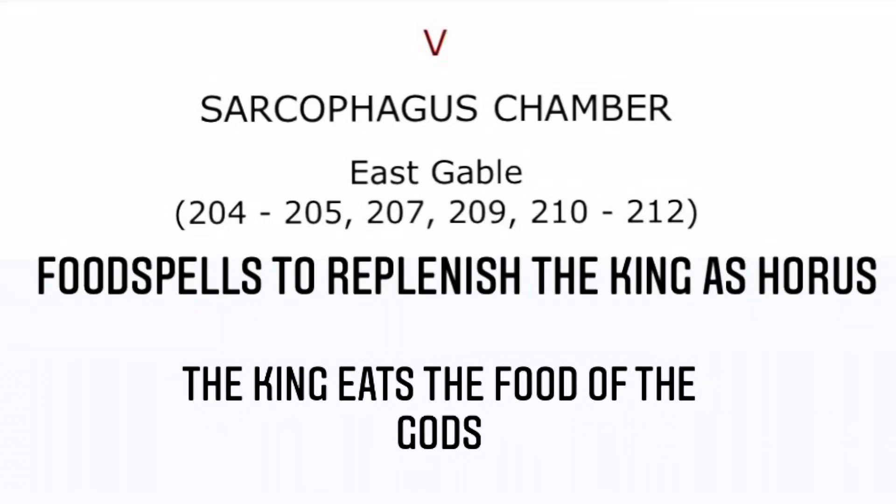Welcome back. In this video, we will be translating the East Gable Wall in the Sarcophagus Chamber of King Unis. The translation will deal with the food spells to replenish the king as Horus. Also, the king eats the food of the gods. In the description, you'll find the links to the translations and images. Please like and subscribe for more content.